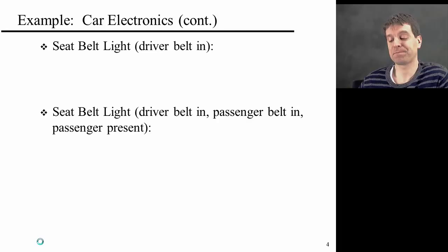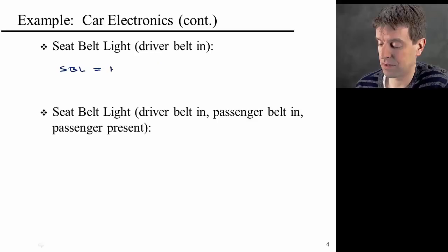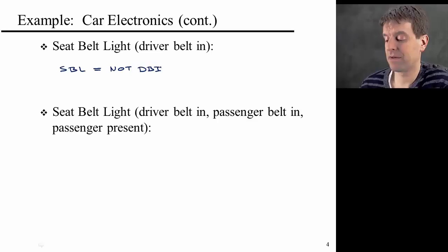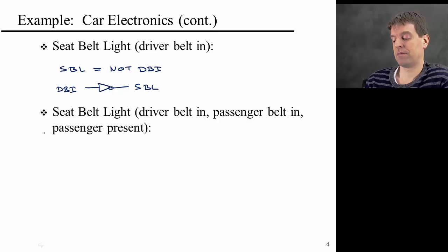Good. So a third example here, the seatbelt light should be on if the driver belt is not in. So SBL equal to not driver belt in. And the corresponding graph looks something like this. This is a NOT gate, the triangle with the dot here. Your output is SBL, and your input is DBI. The NOT gate also referred to as an inverter, of course.